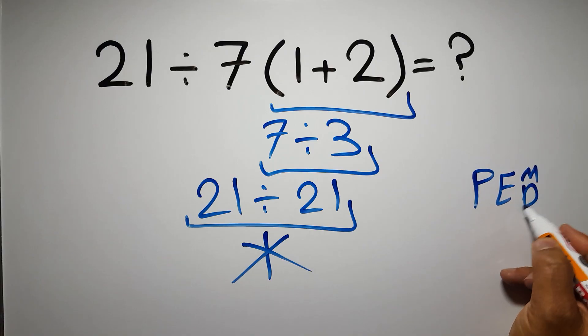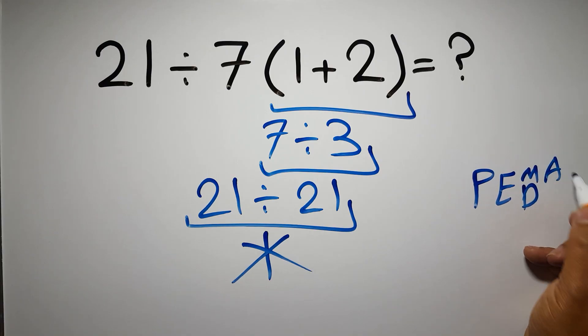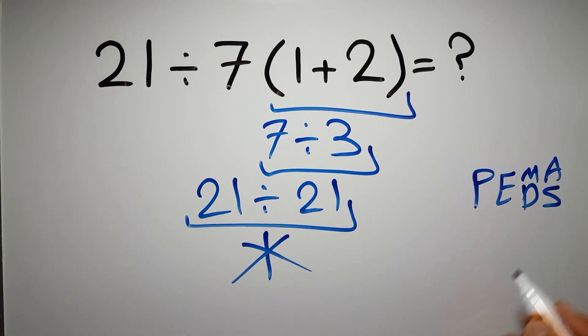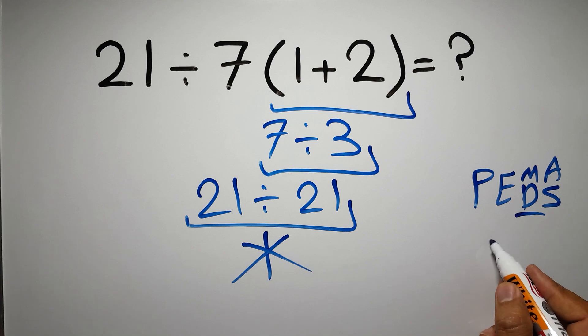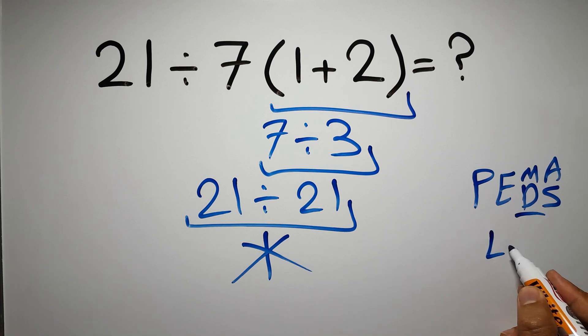Then multiplication or division, and finally addition or subtraction. Remember that multiplication and division have equal priority, and we have to work from left to right.